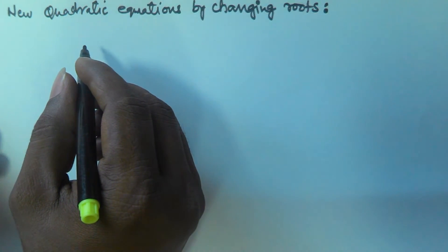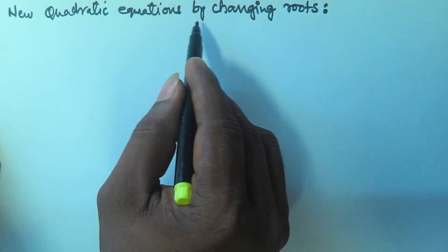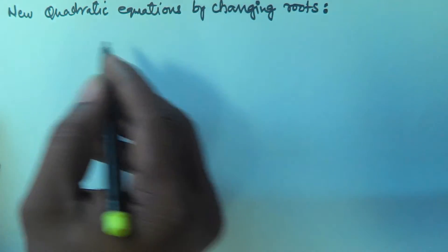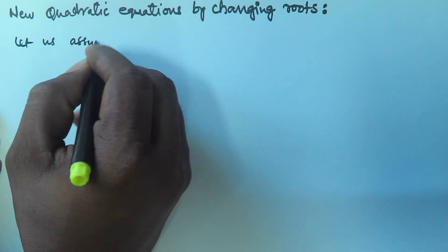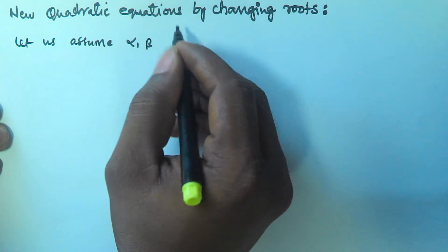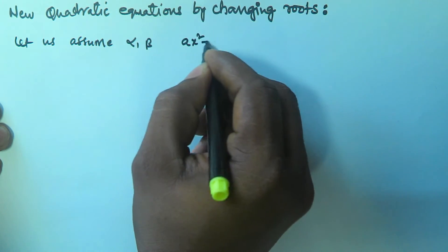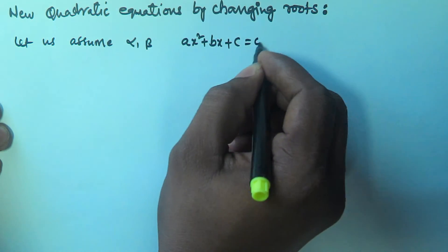Hello friends, in this video we will see how to generate a new quadratic equation by changing the roots of a given equation. So let us assume alpha and beta are the roots of the quadratic equation ax² + bx + c = 0.